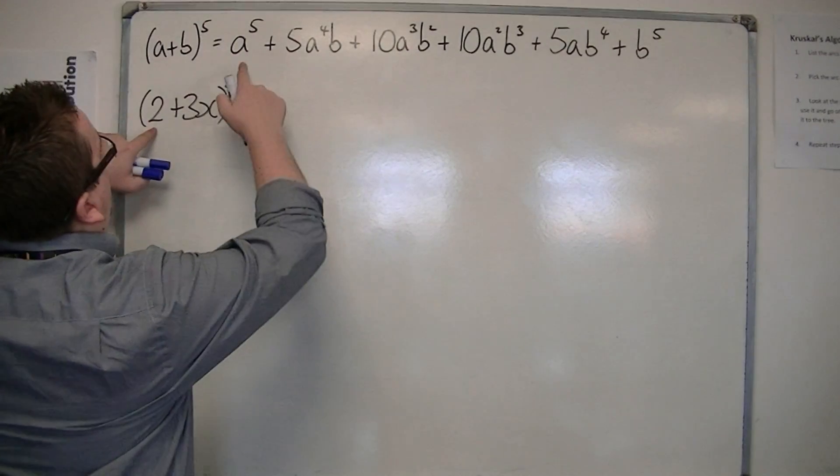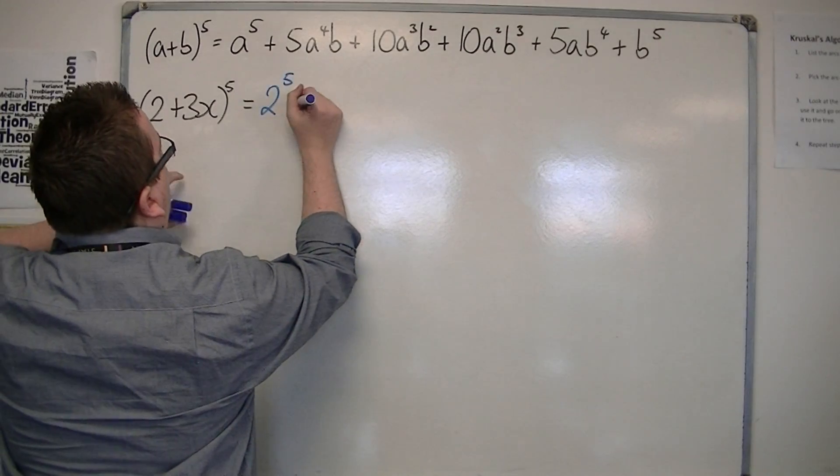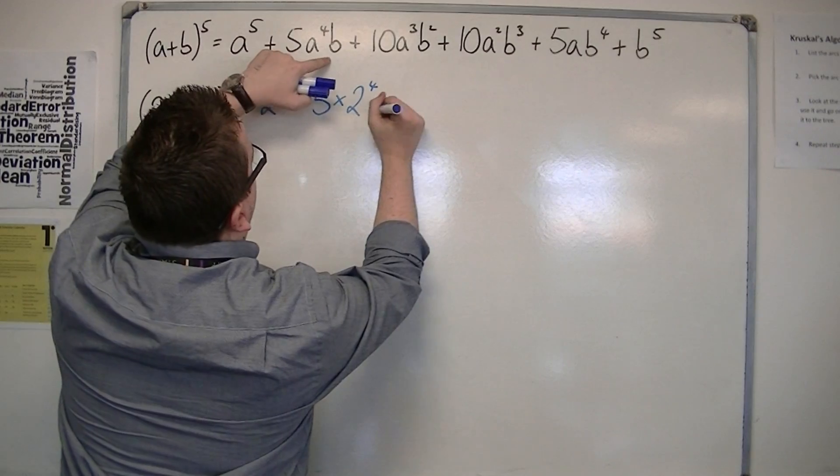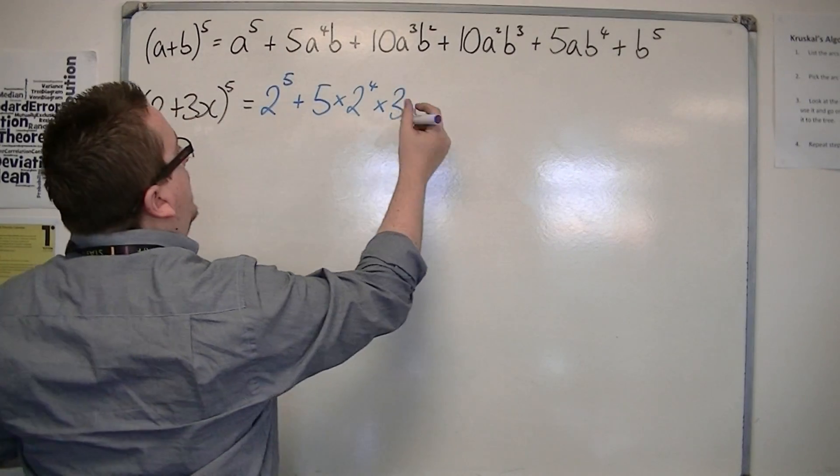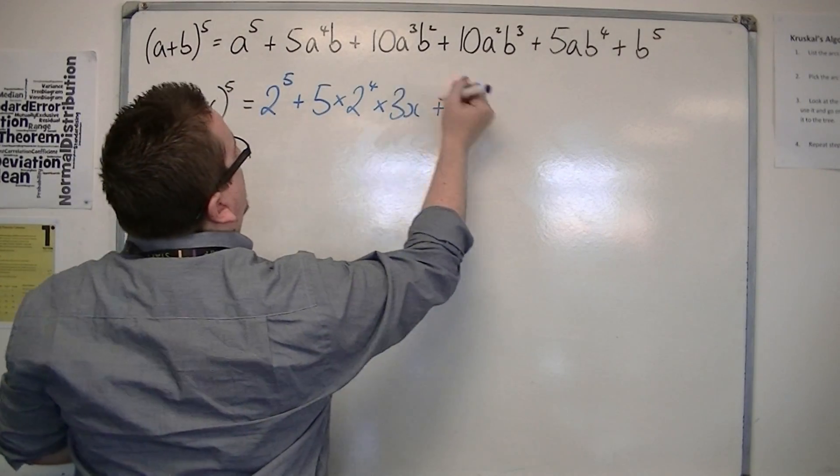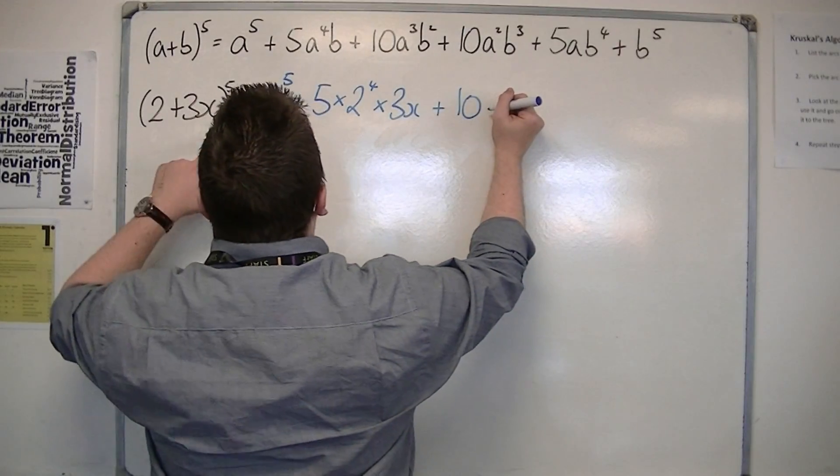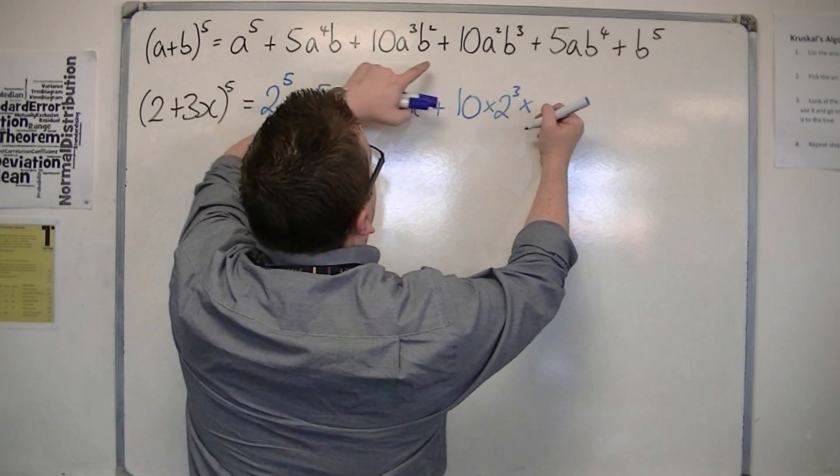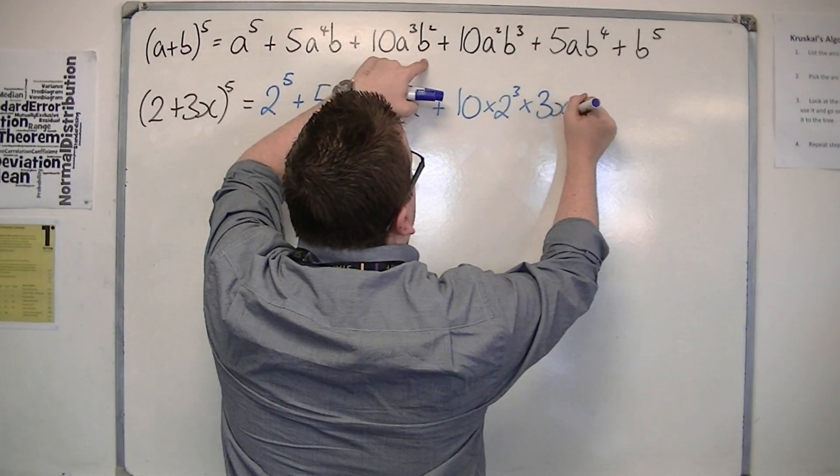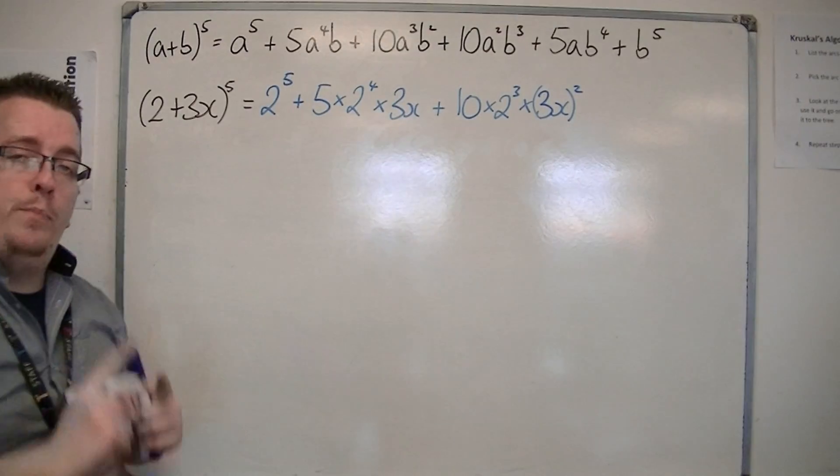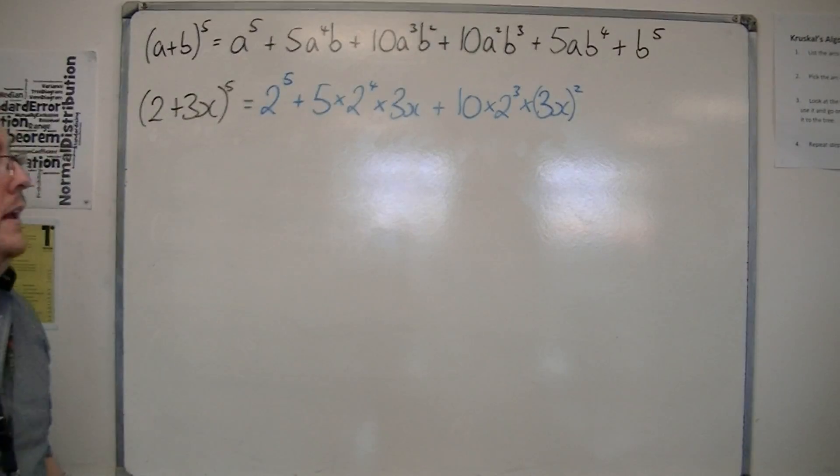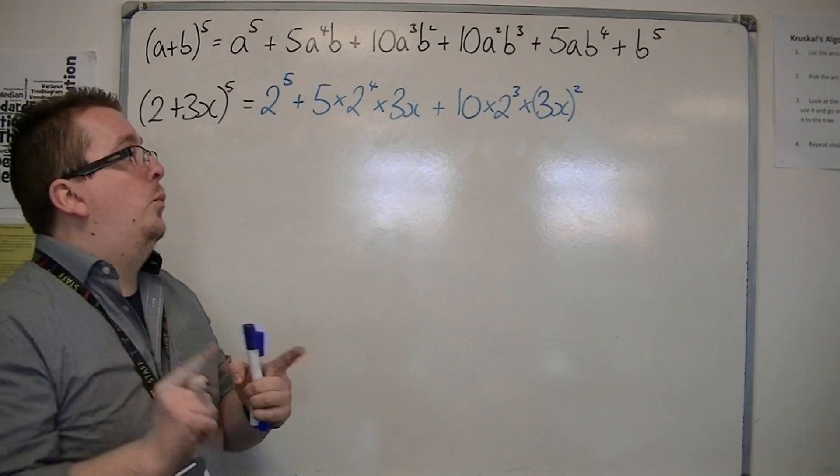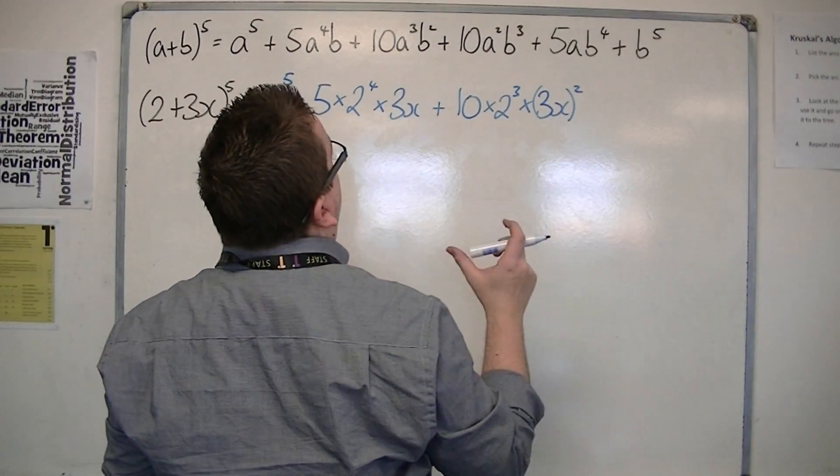So we've got A to the 5, so that's 2 to the 5, plus 5 times 2 to the 4 times 3x, plus 10 lots of A cubed times B squared. Now that's 3x squared. Now you must put the 3x in a bracket, otherwise you're going to forget to square the 3 as well. The 3 must be squared here.